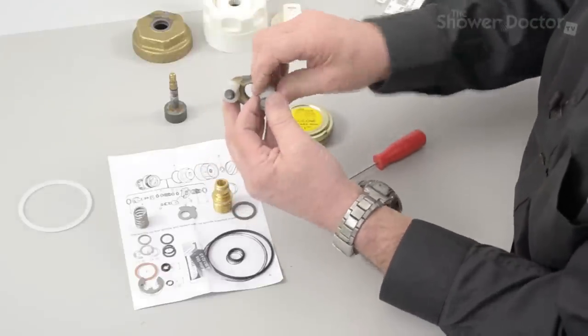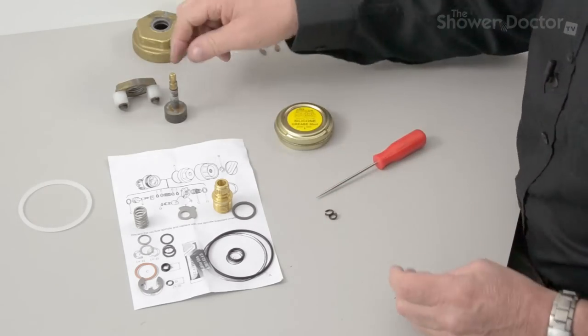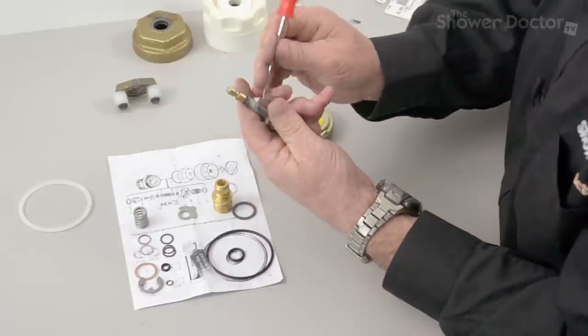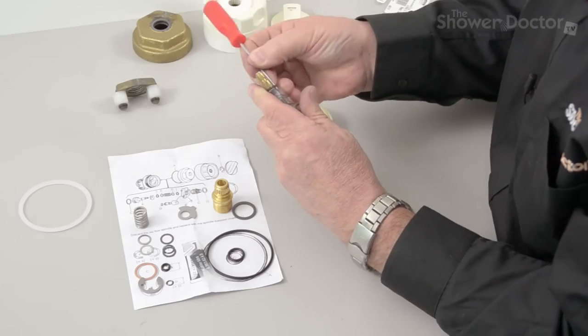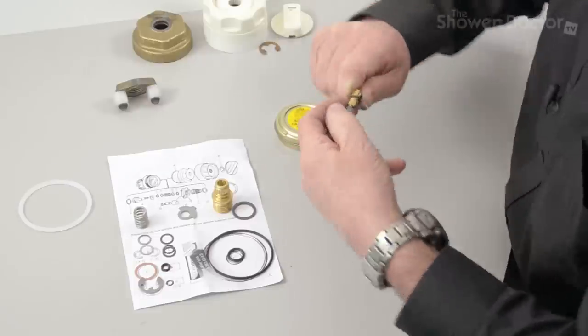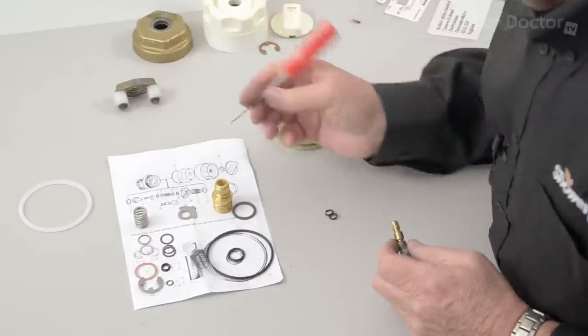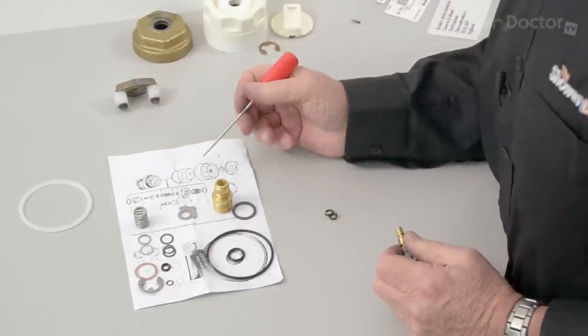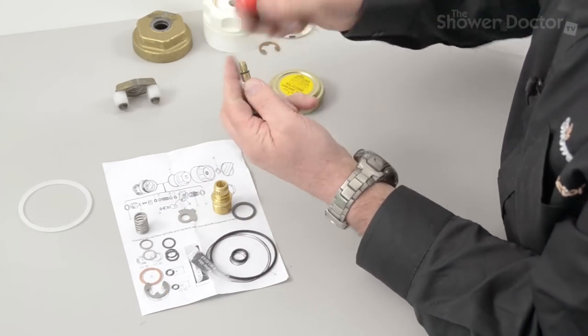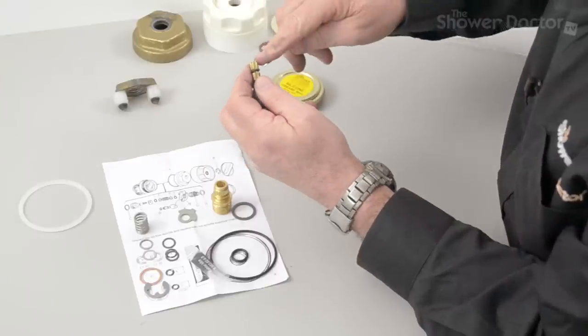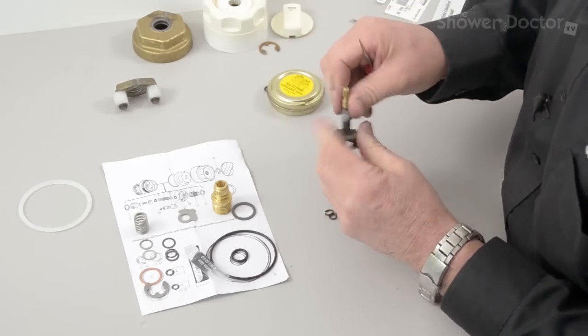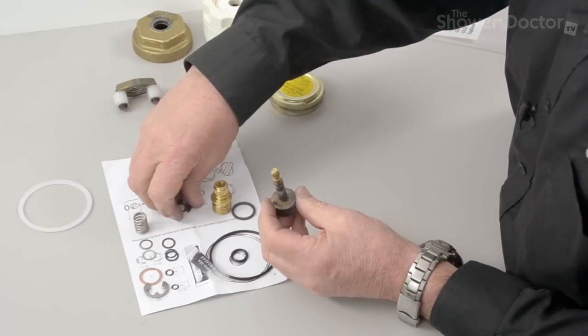That's the halter reassembled. Now the parts for the temperature control. Seal here. And this is seal K, which is this one here.